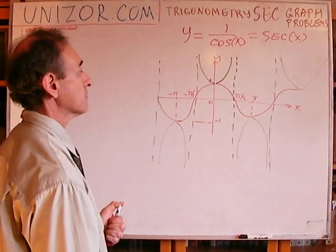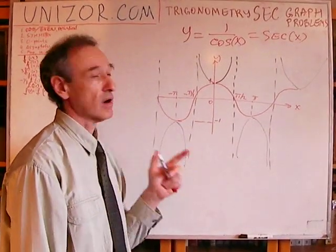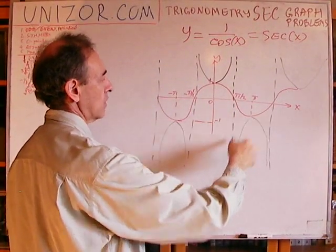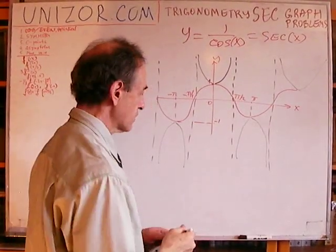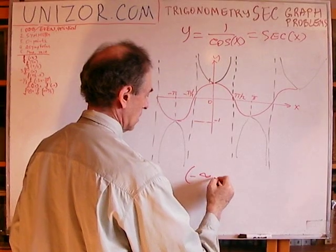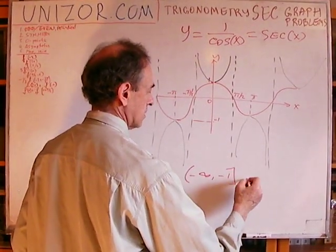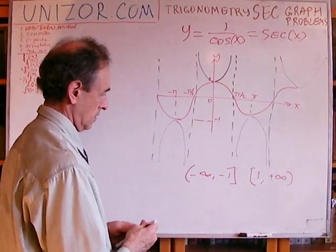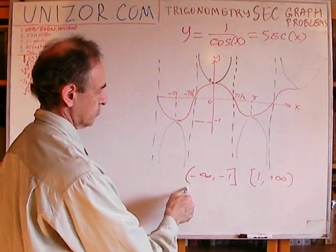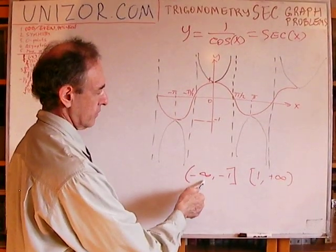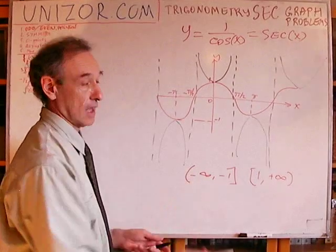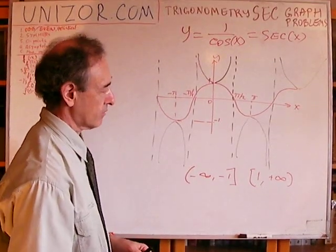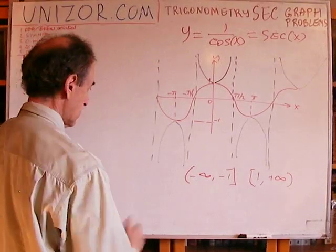Does secant have zero points? No. Secant never equals zero. It goes from either 1 to positive infinity, or from -1 to negative infinity. So the range of this function is a combination of two intervals: (-∞, -1] and [1, +∞). The square bracket means the endpoint is included (at ±1), and the parenthesis means the end is not included because it's infinity.